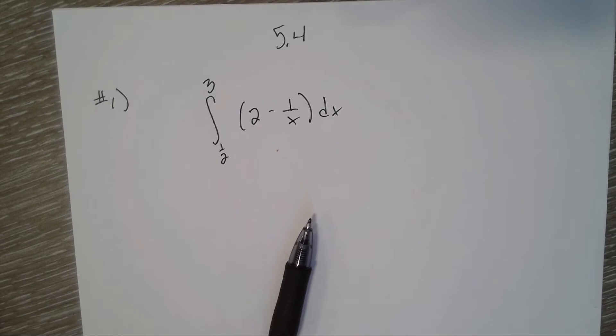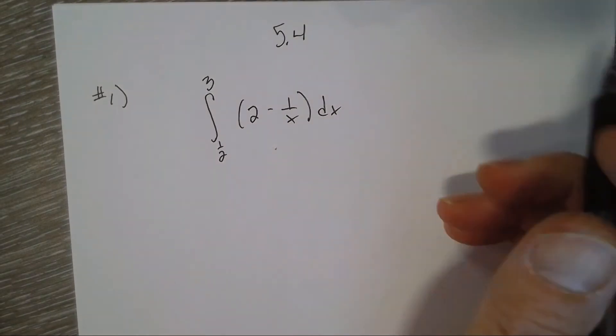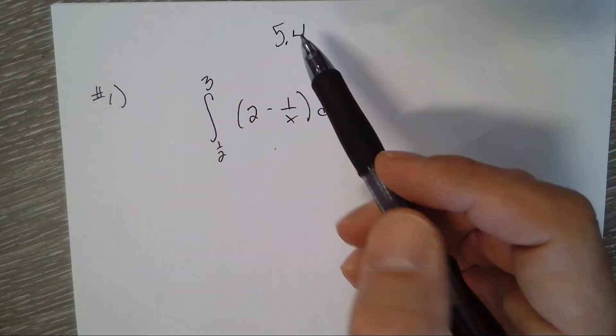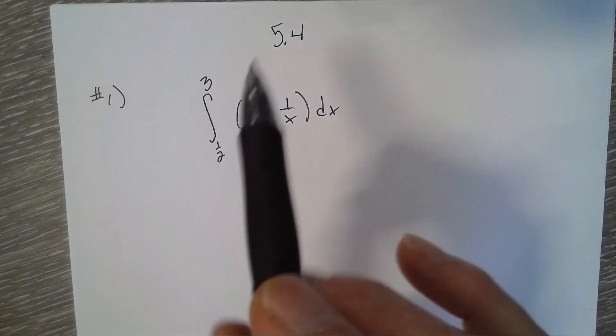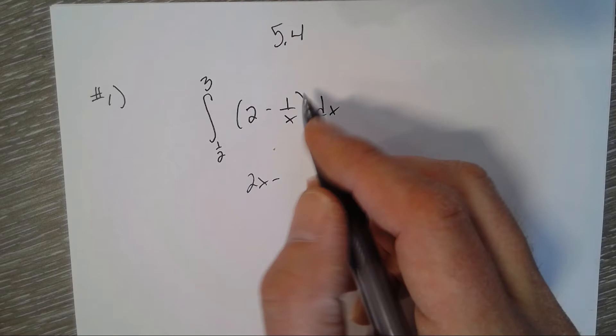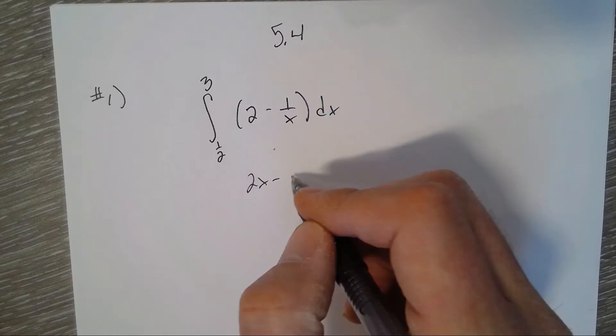For problem 5.4 number 1, we'll use the fundamental theorem of calculus part 2 to evaluate this integral. We find the antiderivative: 2x for the first term, and for 1 over x, the antiderivative is natural log absolute value of x.